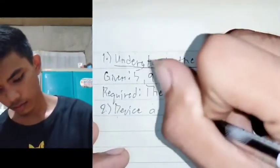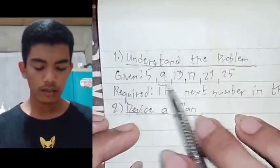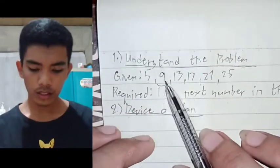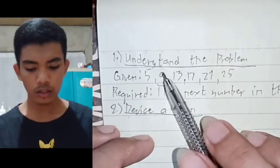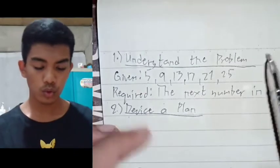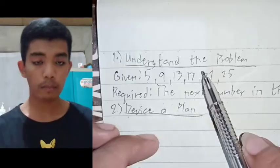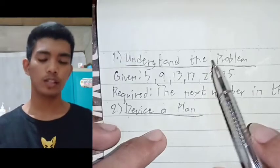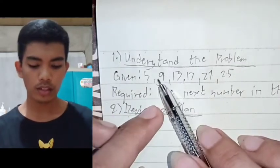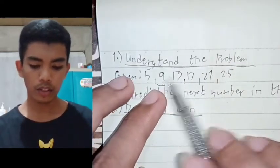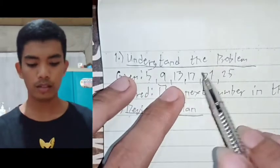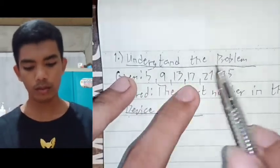You will now proceed to the next step, which is to devise a plan. As you can see here, the sequence has a pattern. The pattern is from the first term to the next and the next and so on, they have a gap of four units. So like 5 plus 4 equals 9, and 9 plus 4 equals 13, and 13 plus 4 equals 17, and 17 plus 4 equals 21, and 21 plus 4 equals 25.